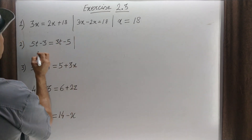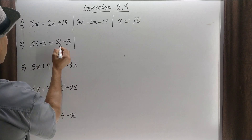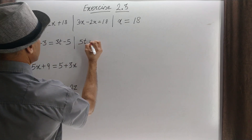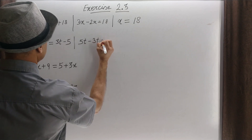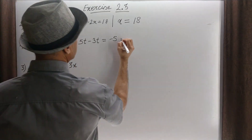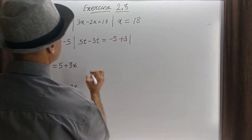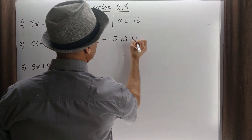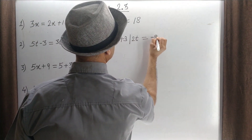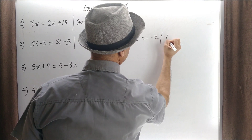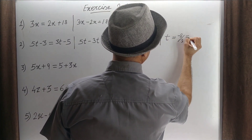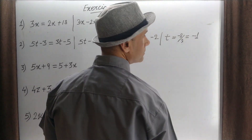This equation: 3t moves to this side with a negative sign. So we write it as 5t minus 3t is equal to minus 5, which becomes plus 3. So this is 2t is equal to minus 2. So t is equal to minus 2 by 2, that is minus 1. Clear?